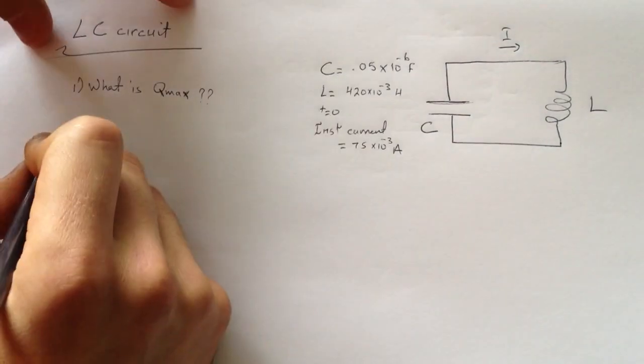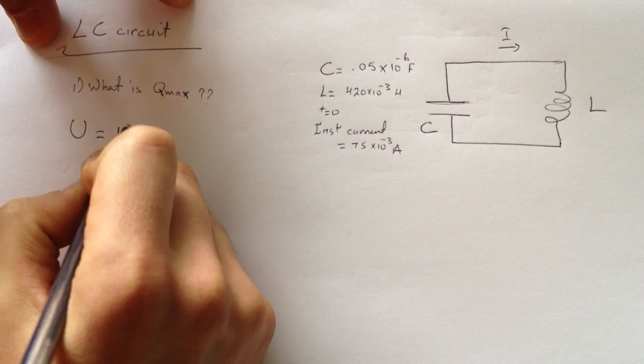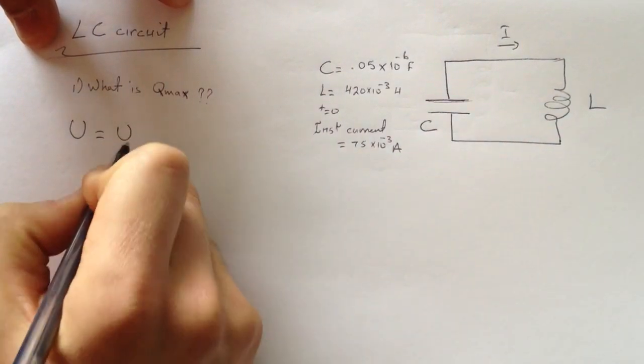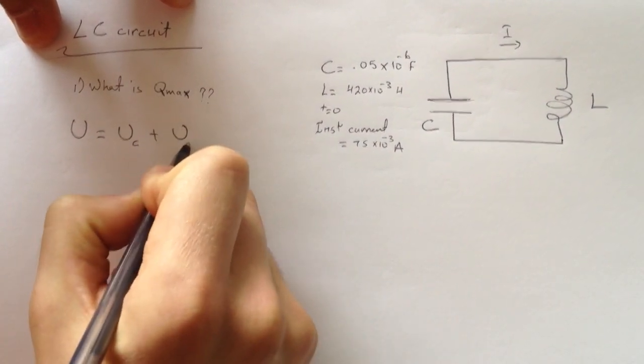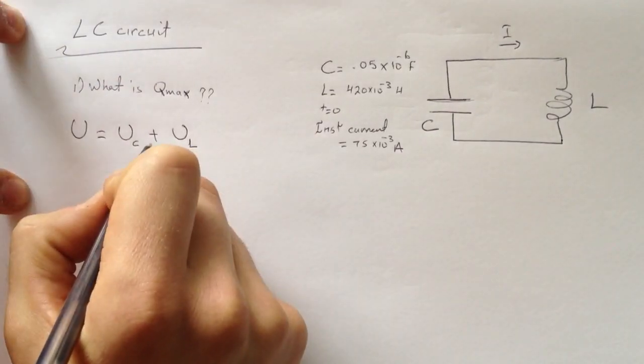So how can that help us? We say that the potential is equal to the sum of the potential of the capacitor plus the potential of the inductor, but since they are both equal to each other and we have the potential energy of the inductor.